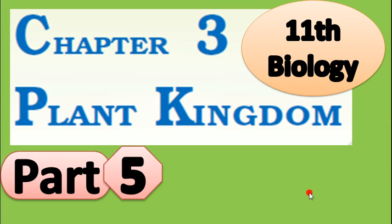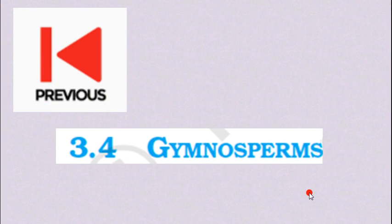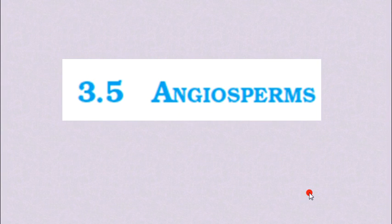Hello, dear students. Jai Swaminarayan. This is Part 5 and the last part of this chapter on Plant Kingdom. In the previous lecture we studied about gymnosperms, our fourth group in the plant kingdom. Now in this video we are going to study angiosperms, the last group of the plant kingdom, and then we will discuss another important topic: alternation of generations.